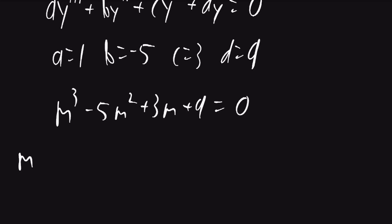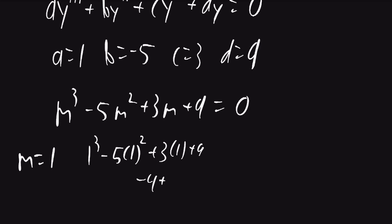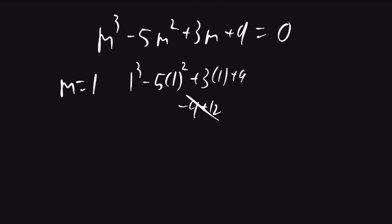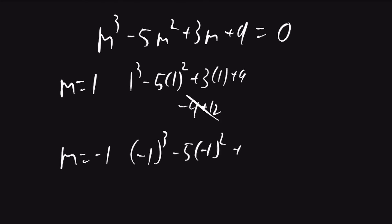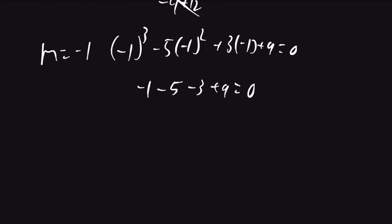We can try some values for m. I'll try m equals 1: it'll be 1 cubed minus 5 times 1 squared plus 3 times 1 plus 9, which gives negative 4 plus 12 — that will not work. I can try m equals negative 1: it'll be negative 1 minus 5 minus 3 plus 9, which gives negative 9 plus 9 equals 0. So m equals negative 1 is one of the roots.